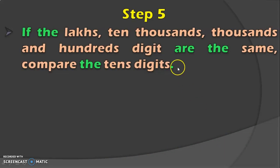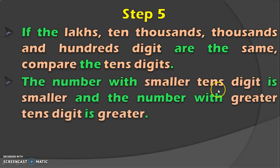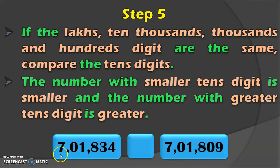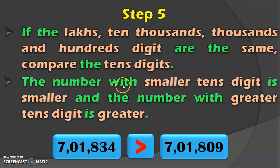The next case is where the lakhs, 10,000th, 1,000th and 100th digits are all the same in both numbers. In such cases, compare the 10th digit. The number with the smaller 10th digit is smaller and the number with the greater 10th digit is greater. In this example, those four places are the same, so we move on to the 10th place where we have 3 and 0. Since 3 is greater than 0, we conclude 7,1834 is greater than 7,1809.